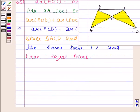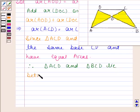Triangle ACD and triangle BCD lie between the same parallels AB and CD.